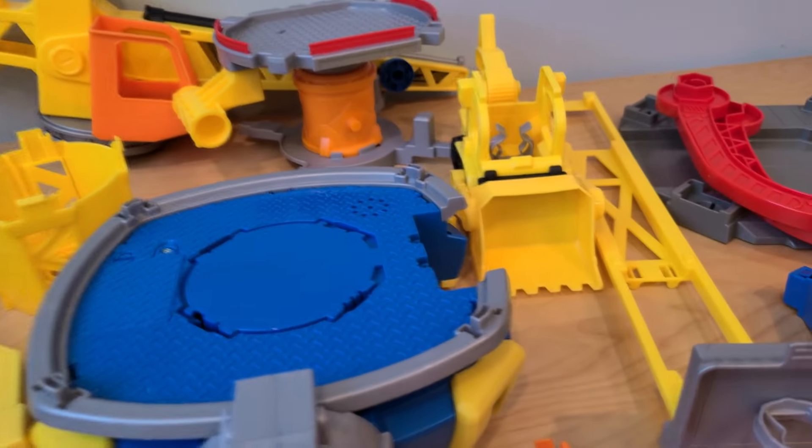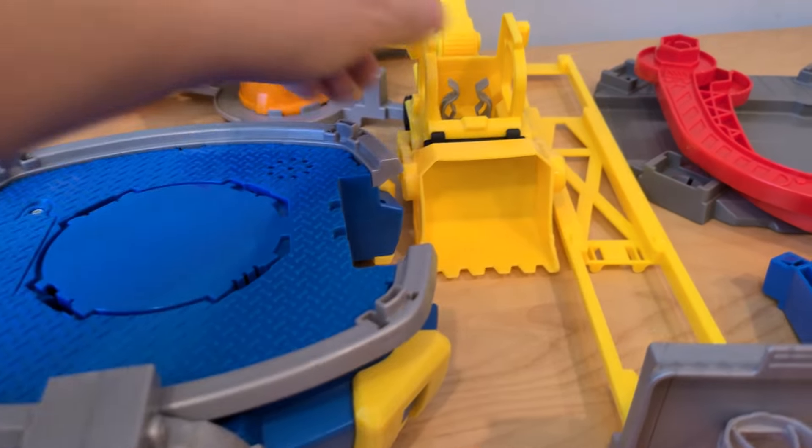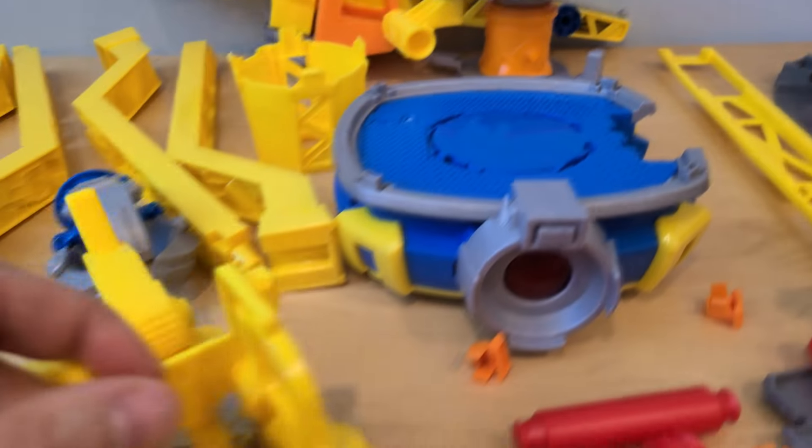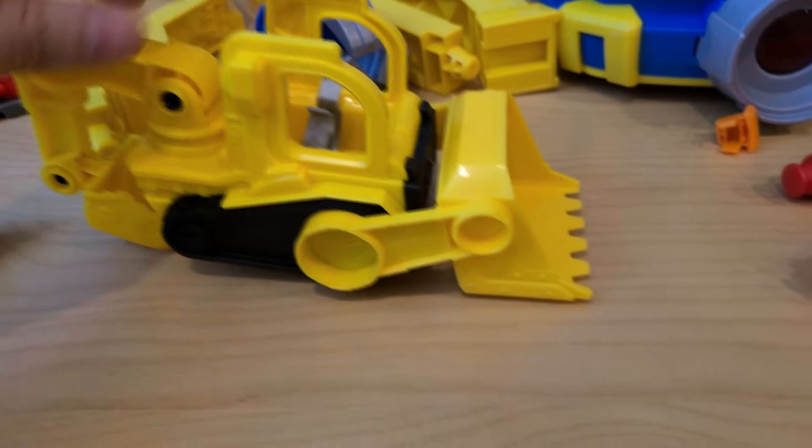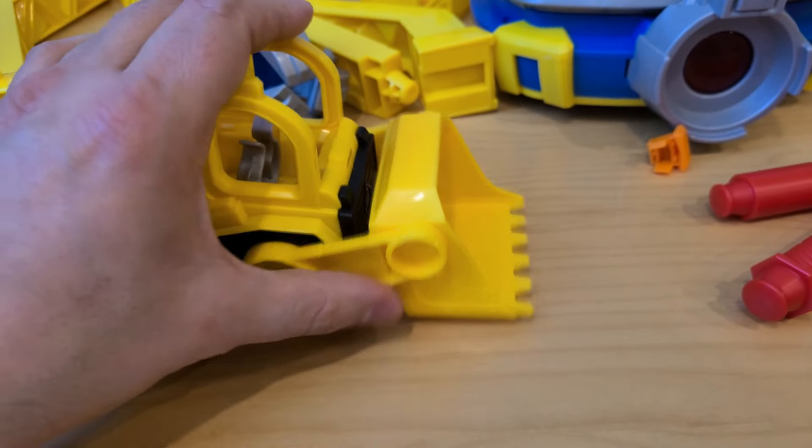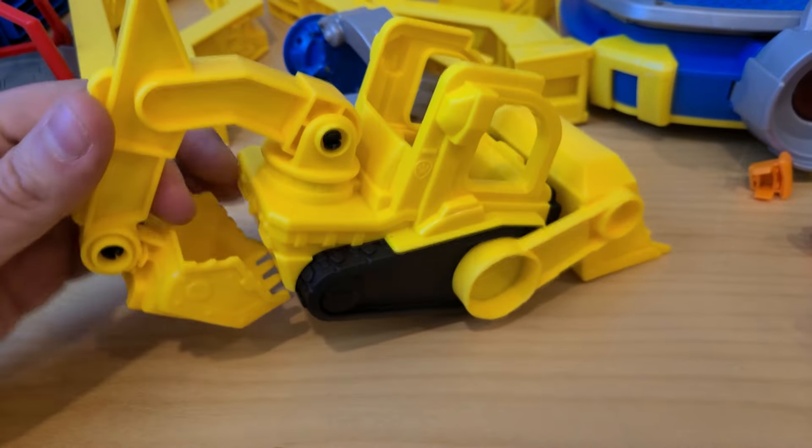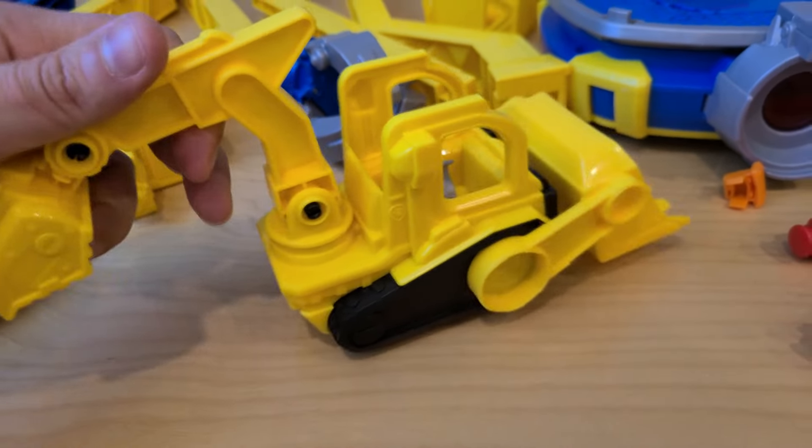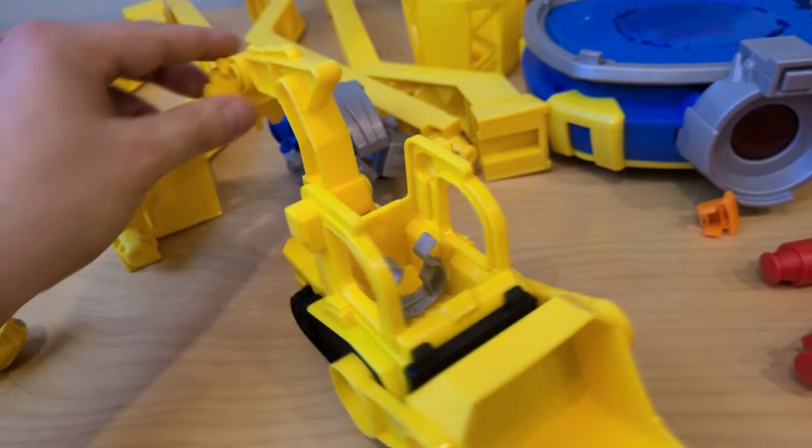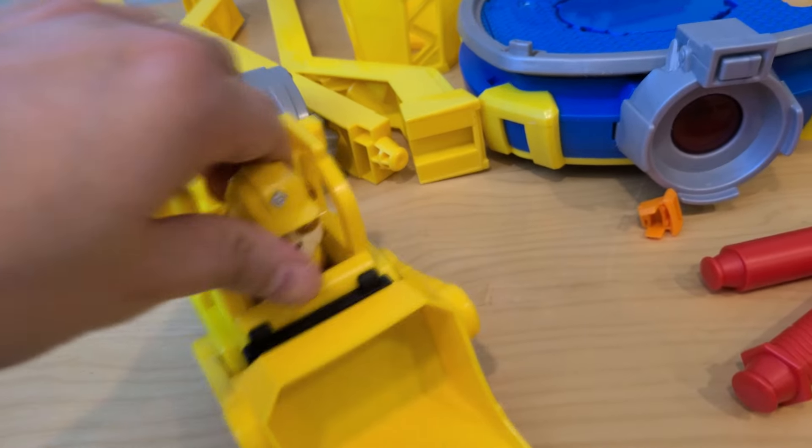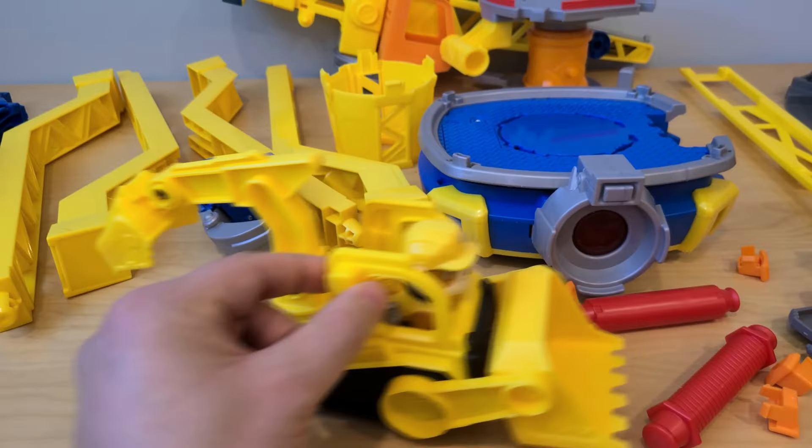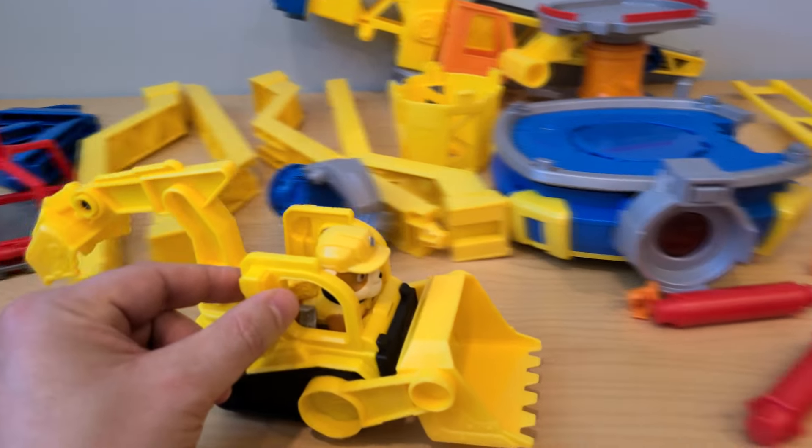Rubble, and this is his car, the bulldozer. Check this one out, this is pretty neat. We could go up and down and we also have the scoop in the back that also moves. Nice. So let's place Rubble inside of the vehicle. Oh yes, now we are ready to have some fun.